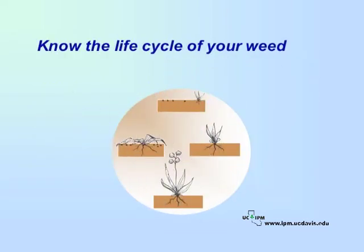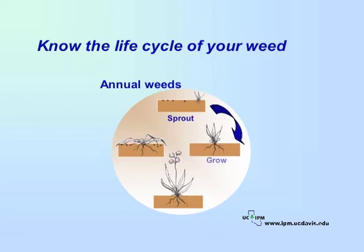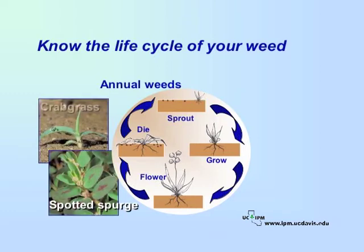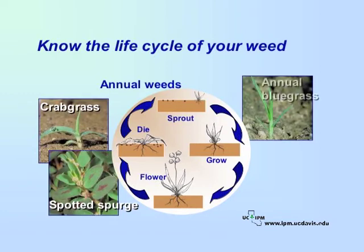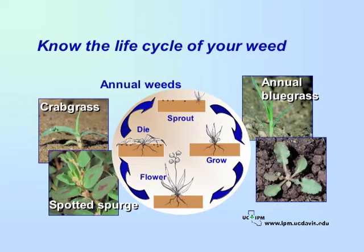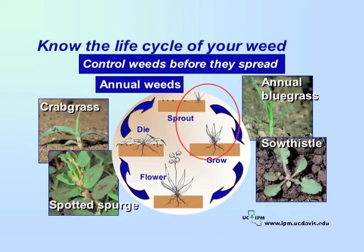Understanding the life cycle of weeds is key to managing them. Weeds are generally grouped as annual weeds or perennial weeds. Annual weeds complete their life cycle in one season — they sprout from seeds, grow and develop flowers, and produce more seeds before dying. Some common annuals include spotted spurge, crabgrass, annual bluegrass, and sow thistle. You want to control annual weeds before they flower and produce seeds, because they can produce another population for next season.